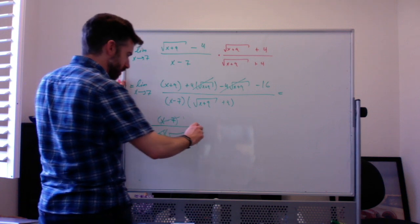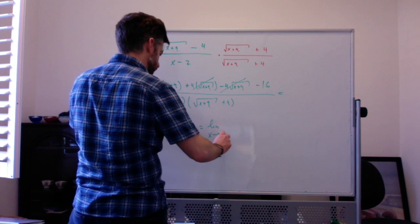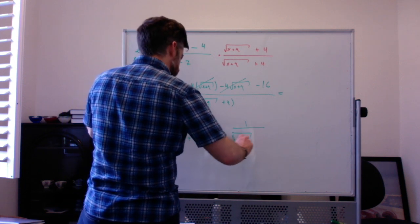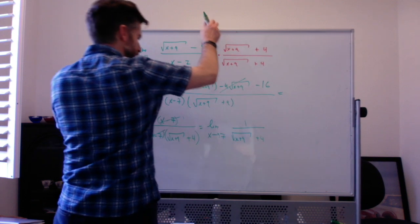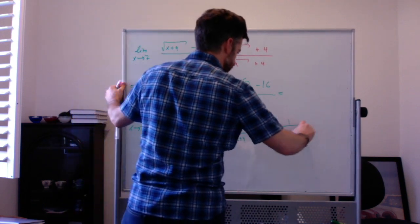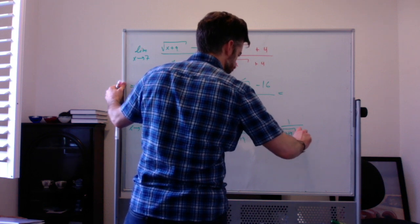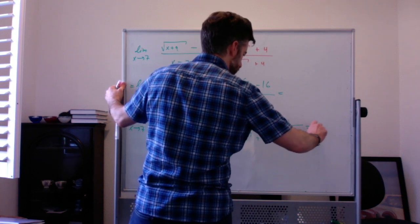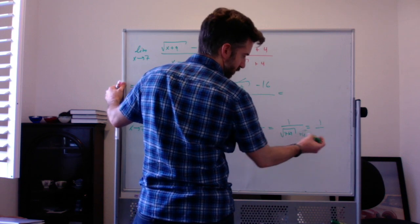This x minus 7 and this x minus 7 cancel, leaving 1 on top. So I get the limit as x goes to 7 of 1 over the square root of x plus 9 plus 4. Plugging in 7, I get 1 over the square root of 7 plus 9 plus 4, which is 1 over the square root of 16 plus 4, and 4 plus 4 is 8.